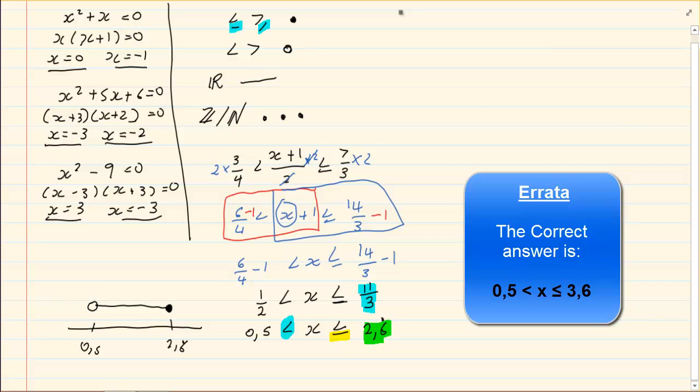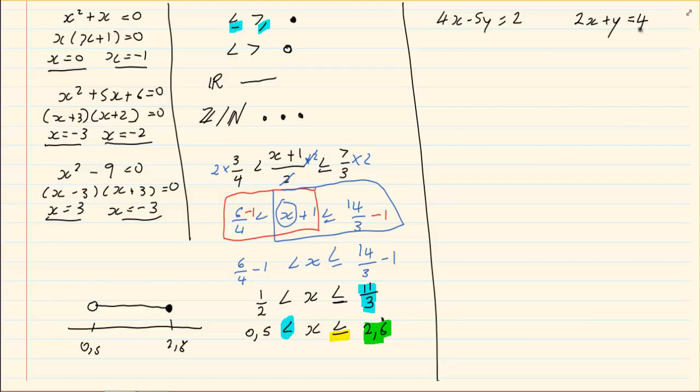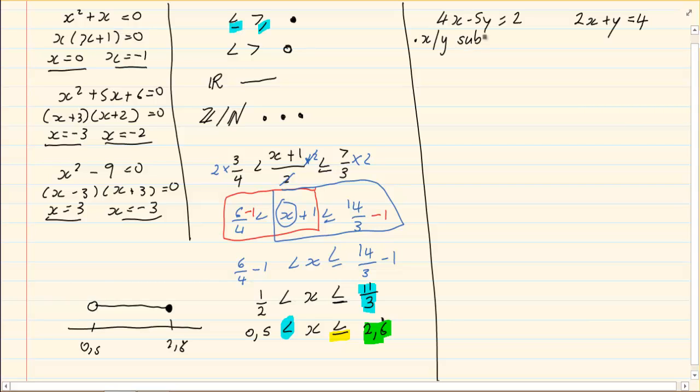The next thing in our summary that we are going to do is simultaneous equations. In simultaneous equations we are going to use the method where we make x or y the subject of the formula. When you are doing this, always look at the easier equation. Now if you have a look at 4x and 5y and then you have a look at 2x and y, the best one to get alone would be the y in the second equation.